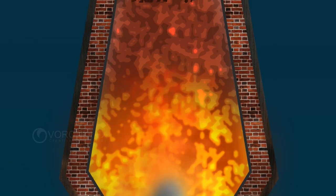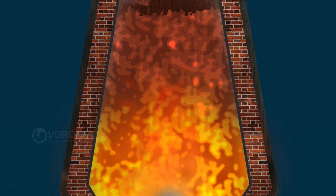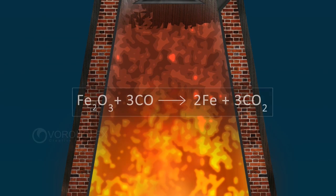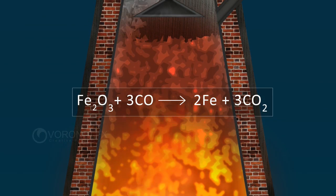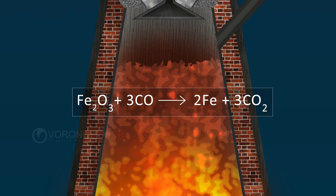Carbon monoxide formed in the furnace reduces the ore. Fe2O3 on reaction with 3CO forms 2Fe and 3CO2.